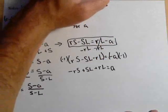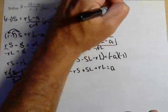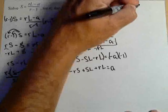And we'll put it up here. So RS minus SL equals RL minus A.